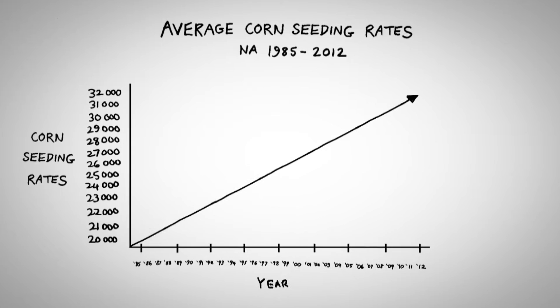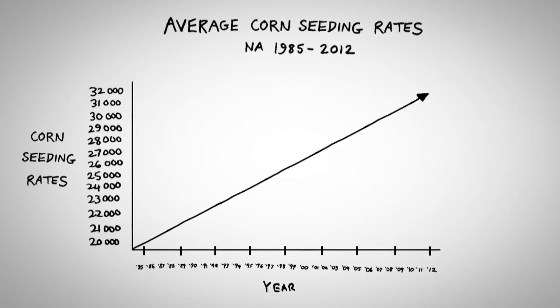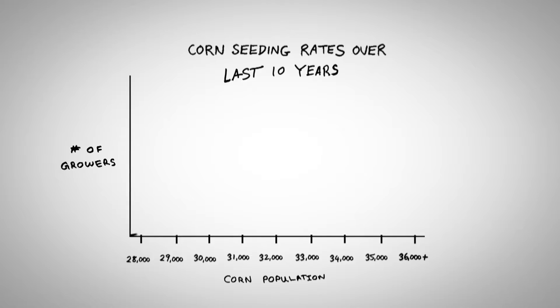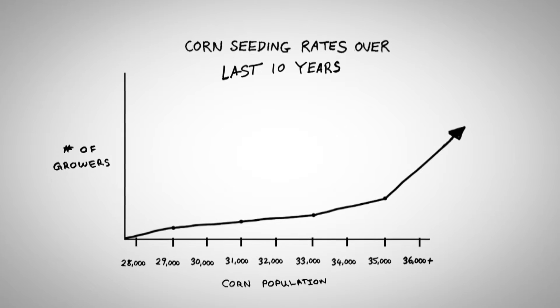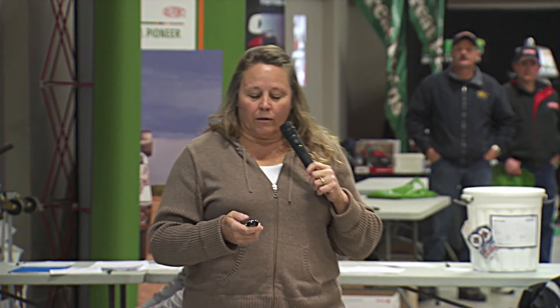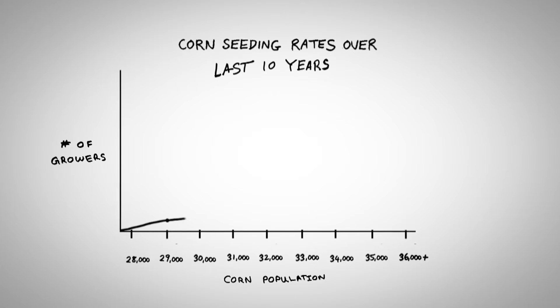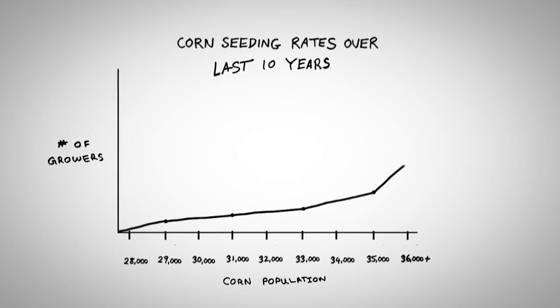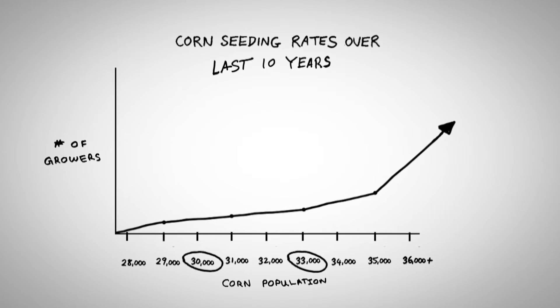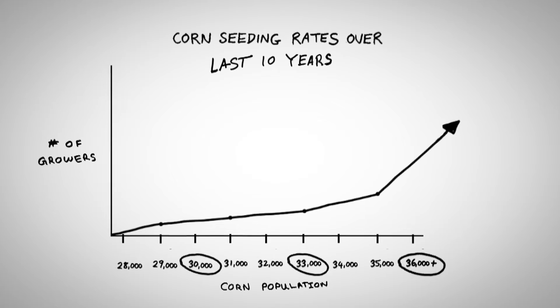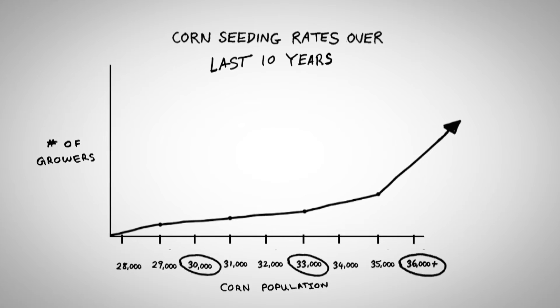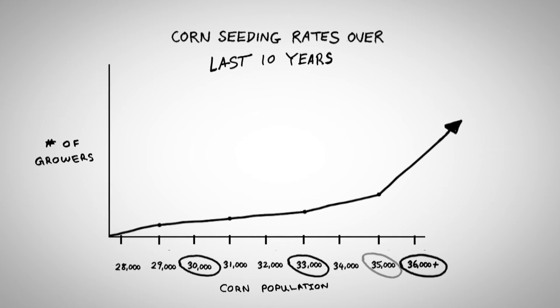Looking at population, the average seeding rate is almost 31,000 seeds per acre. As we look at it by population ranges, populations are slowly going down in the high 20,000 range and going up as we get over 30,000 seeds per acre — a very consistent increase in population over the last 10 years. Breaking it out into 30–33k, 33–36k, and 36k-plus ranges, we see they're starting to fall off at the lower range but moving up higher when we get into the 35,000 seeds per acre range.